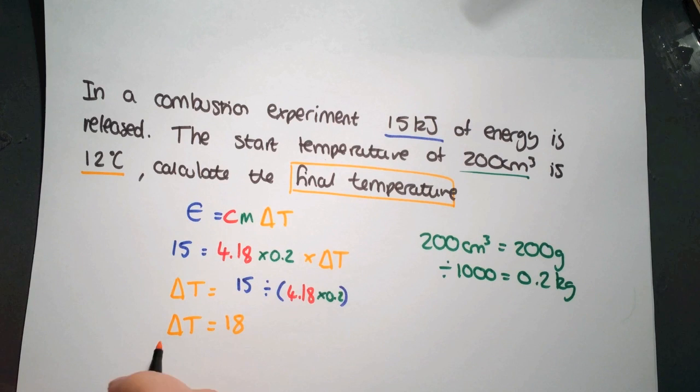So this has been our temperature rise. We started off with a temperature of 12 degrees and it's risen by 18 degrees so we can add that on and that gives us a final temperature of 30 degrees C.